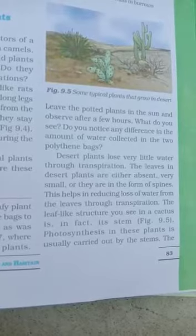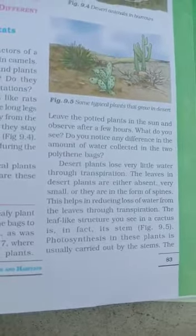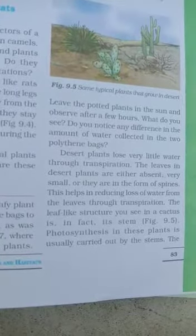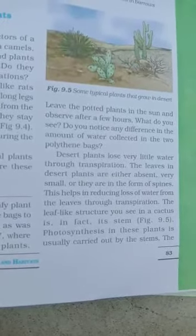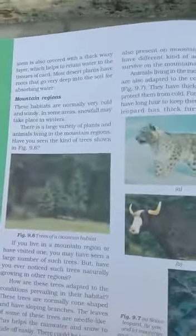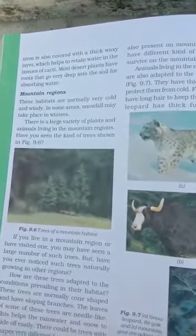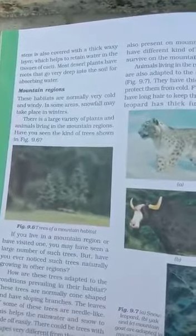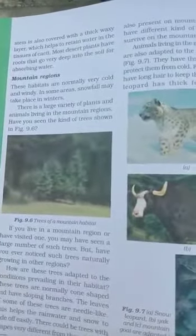In plants like cactus, photosynthesis is usually carried out by the stem, not by the leaves. The stem is also covered with a thick waxy layer which helps to retain water in the tissues of the cactus. Most desert plants have roots that go very deep into the soil for absorbing water, because there is little or no water available near the surface.